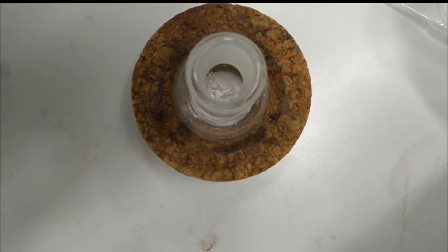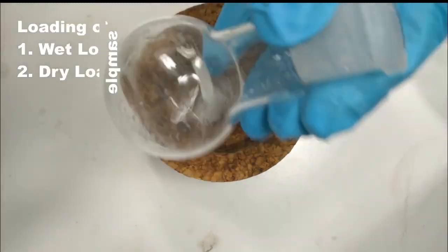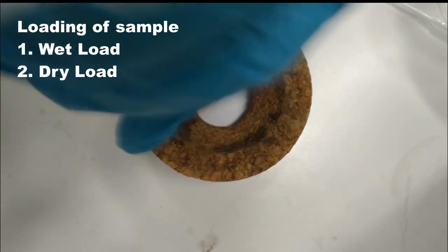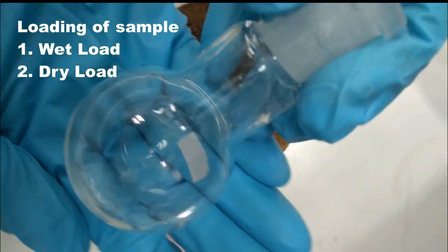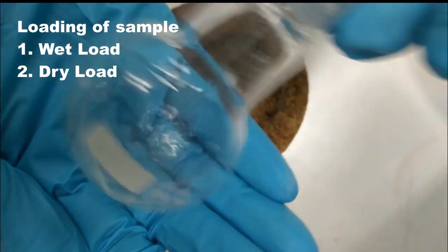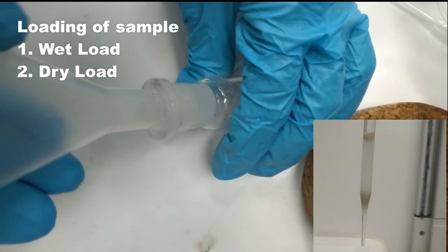Moving toward the most important part of column chromatography is to load the sample. It has two ways: either wet load or dry load. For wet load, you need to dissolve compound into minimum amount of solvent and directly pour onto the top of column.